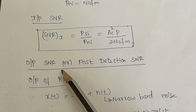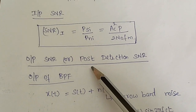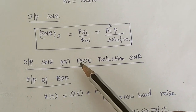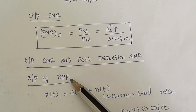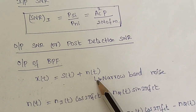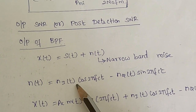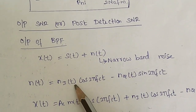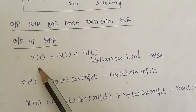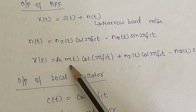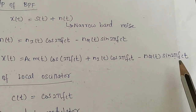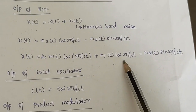As a next step, we find the output signal to noise ratio. The first block is the bandpass filter, and its output X of T is S of T plus narrowband noise. Narrowband noise is represented in rectangular form using in-phase and quadrature-phase components: NI(t)·cos(2πFcT) − NQ(t)·sin(2πFcT). Substituting S of T, X of T becomes Ac·M(t)·cos(2πFcT) + NI·cos(2πFcT) − NQ·sin(2πFcT).